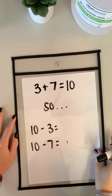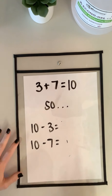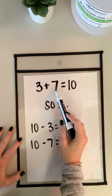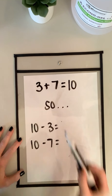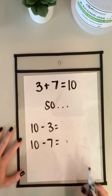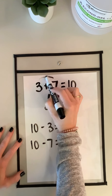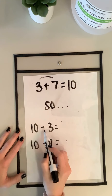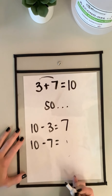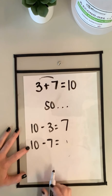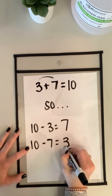Let's look at this one. I know 3 plus 7 equals 10. So I'm going to use my subtraction 10 partners — I know that these are my partners. 10 minus 3 is going to equal 7, and 10 minus 7 is going to equal 3.